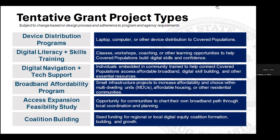The fifth project type is access expansion feasibility studies — an opportunity for communities to chart their own path and plan their broadband journey to expand access through local coordination and planning. Finally, the sixth is coalition building — seed funding for regional or local digital equity coalition formation and growth. We know coalition building takes a lot of time, resources, and expertise, and we want to see more digital equity alliances formed across Illinois. This is important, sustainable work, and we want local structures and teams to support this growth ongoing.